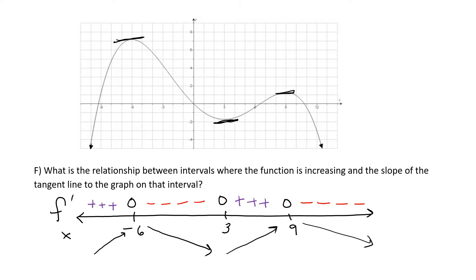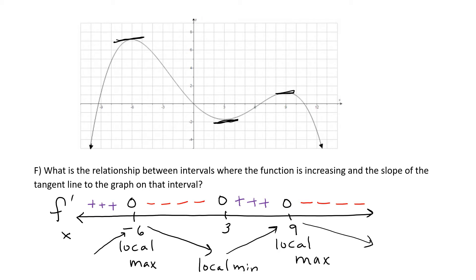Notice the relationship: the derivative is positive when the graph rises, negative when the graph falls, positive when it rises again, negative when it falls. So if the derivative goes from positive to negative at a particular point, you have a local max. If the derivative goes from negative to positive at a particular point, you have a local minimum. At x = 9, the derivative is positive as the graph rises, then negative as it falls — that's a high point, so it's a local max.